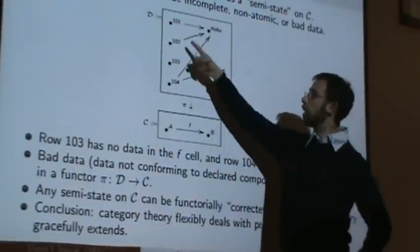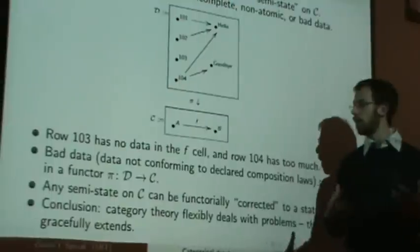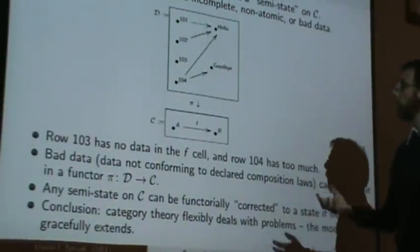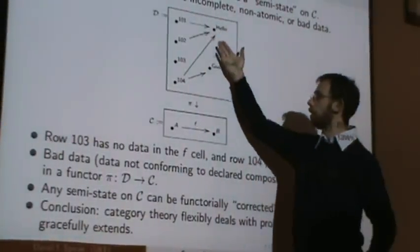So now, again, the fiber over A is 101, 102, 103, 104. Fiber over B is hello, goodbye. So that's kind of the rows of A are these, and this is what's supposed to, this is F of things.